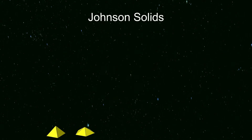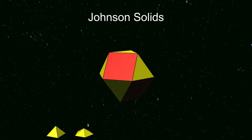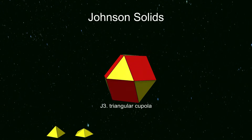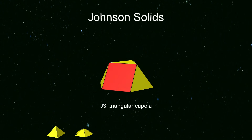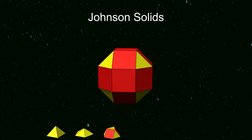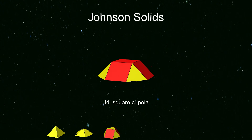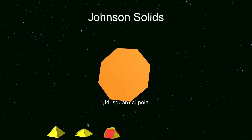The next four are parts of Archimedean solids. Half a cuboctahedron gives us J3, called the triangular cupola. It has a triangle at the top and a hexagon at the bottom, connected by a ring of triangles and squares. The top of a rhombicuboctahedron is a square cupola, like the triangular cupola but with a square and an octagon.